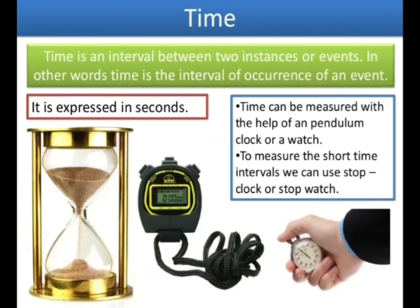Moving to our third physical quantity: time. It is the interval of occurrence of an event — the interval between two instances or events. Time is expressed in seconds, and second is the SI unit of time. Time can be measured with the help of a pendulum clock or a watch. To measure short time intervals, we can use a stop clock or stop watch — which you have already used on your sports day.